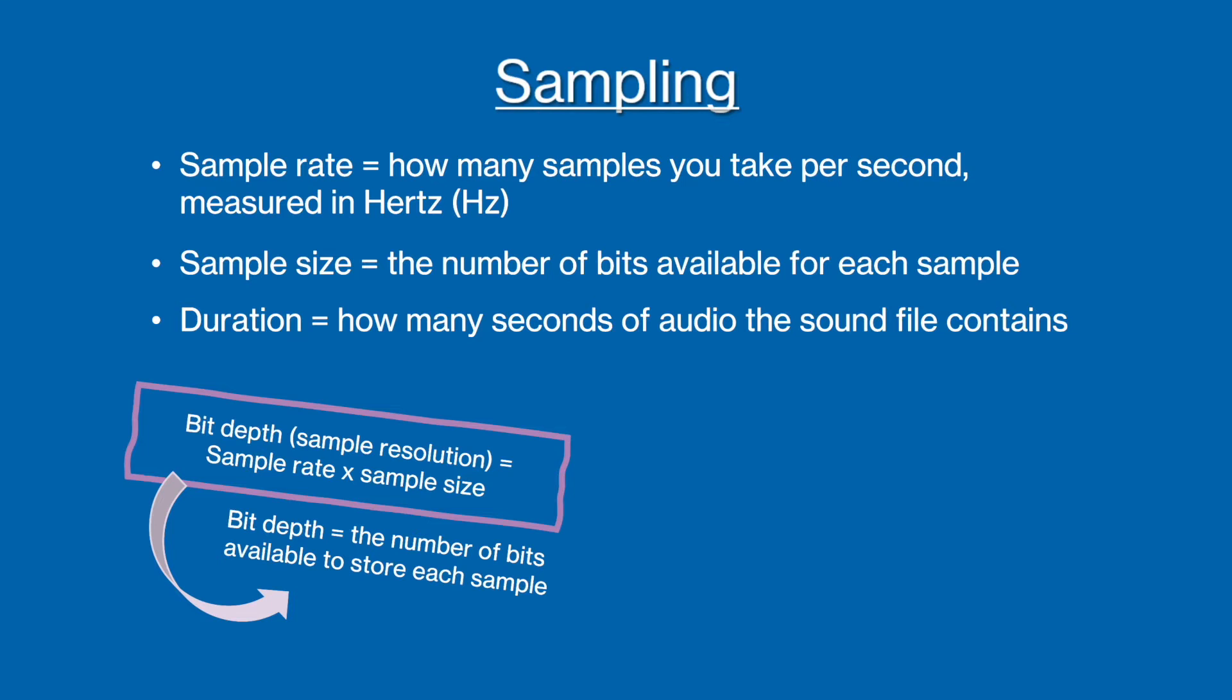For example, if you had a two-second audio clip that was sampled 100 times per second, and each sample had 0.16 bits, then the bit depth would be the sample rate, 100, times the sample size, 0.16, so the bit depth would be 16.